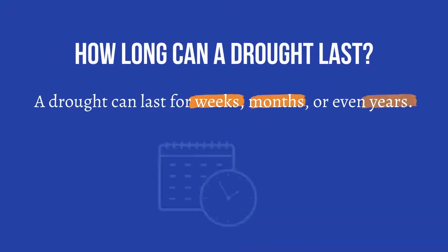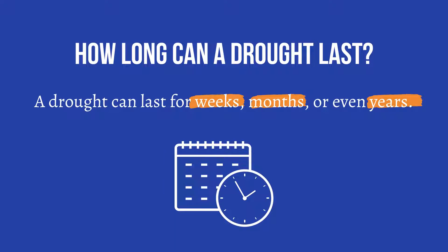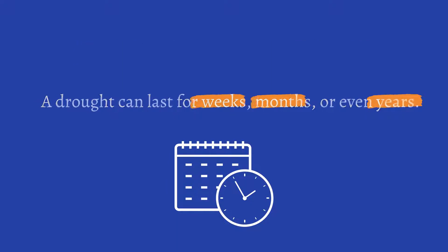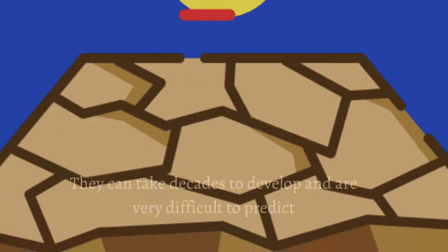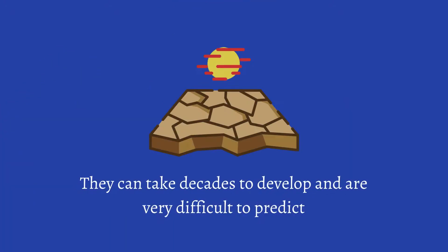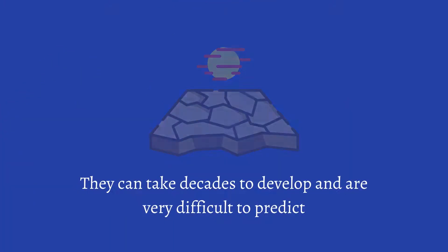How long can a drought last? A drought can last for weeks, months, or even years. They can take decades to develop and are very difficult to predict.